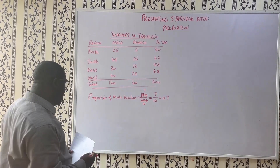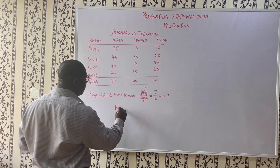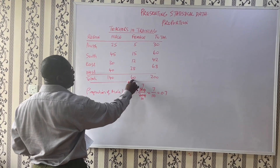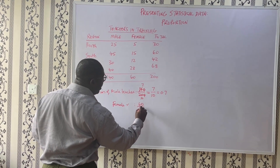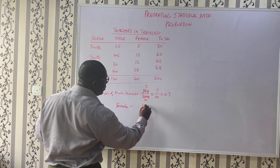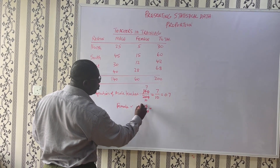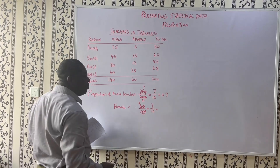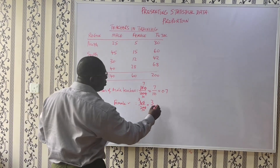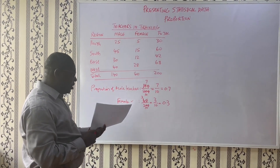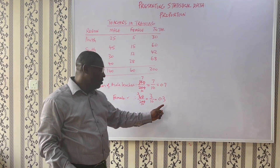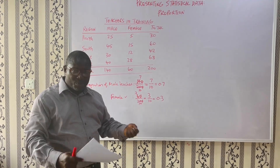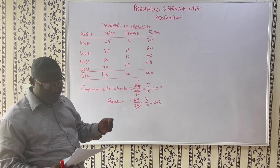Now we can do the proportion of female teachers. That will be taking the total number of female teachers, which is 60, divided by 200. That gives us 3 over 10. If you convert 3 over 10 to decimal, we're going to have 0.3. So you realize that if you add 0.7 to 0.3, you're going to have 1 — that will tell you that is the whole. Where you have all parts pulled together, you have a whole and that whole is represented by one.